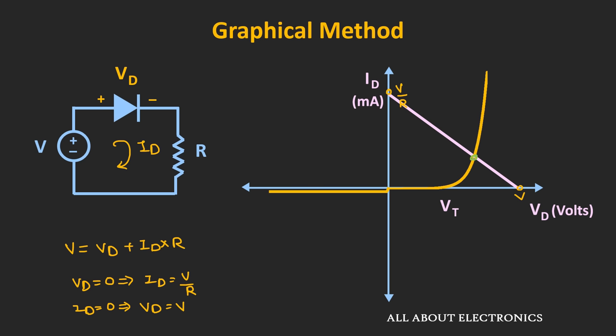The intersection point of the load line with the diode's VI characteristic gives us the operating voltage and current for the diode. Although this graphical method gives us very accurate values of voltage and current, it is a very time-consuming process. So there is another way by which we can not only quickly solve the circuits, but also troubleshoot them — and that method is the diode approximation method.